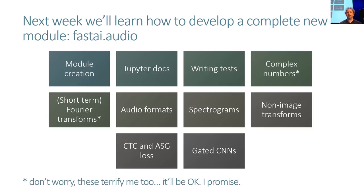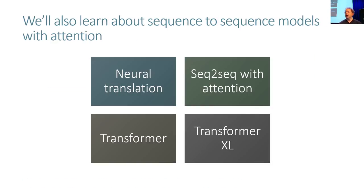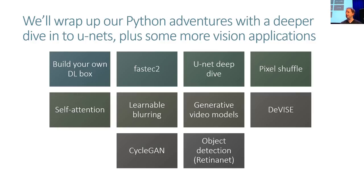The FastAI.audio work is a great exercise in: I've got some different data types, it's not in FastAI, how do I build up all the bits I need to make it work? Then we'll look at neural translation as a way to learn about sequence-to-sequence with attention models, and then go deeper into Transformer and Transformer XL. We'll wrap up our Python adventures with a deep dive into vision topics, building bigger models, building your own deep learning box, and running big experiments on AWS with a new library called FastEC2.